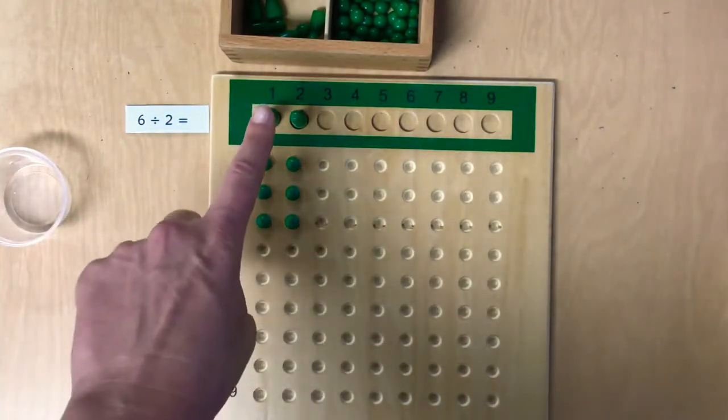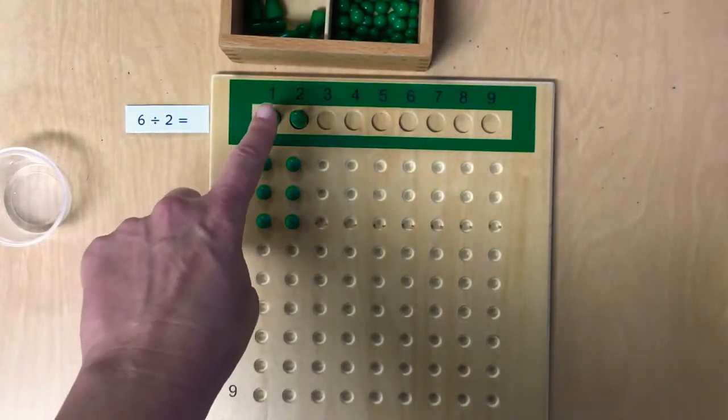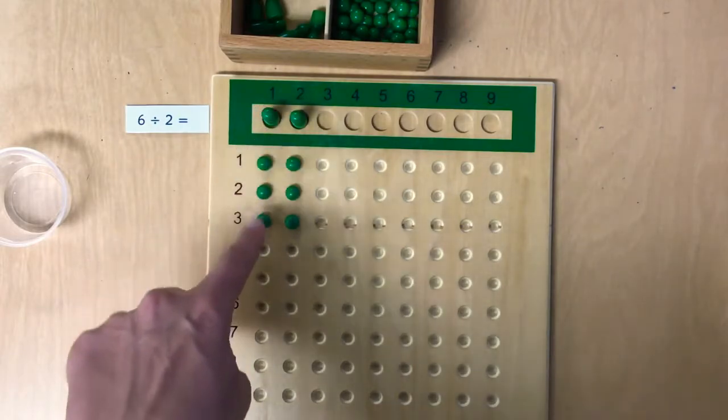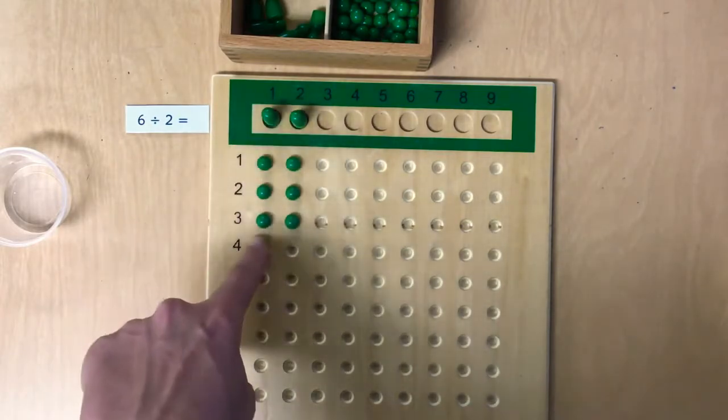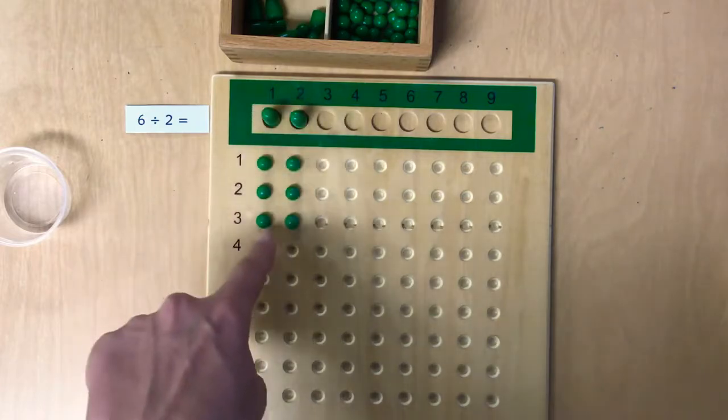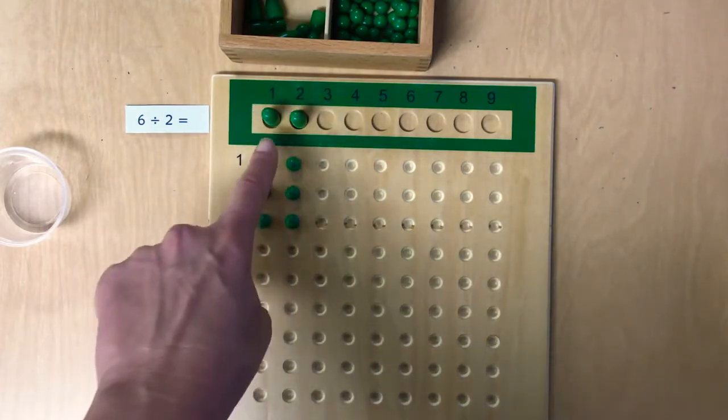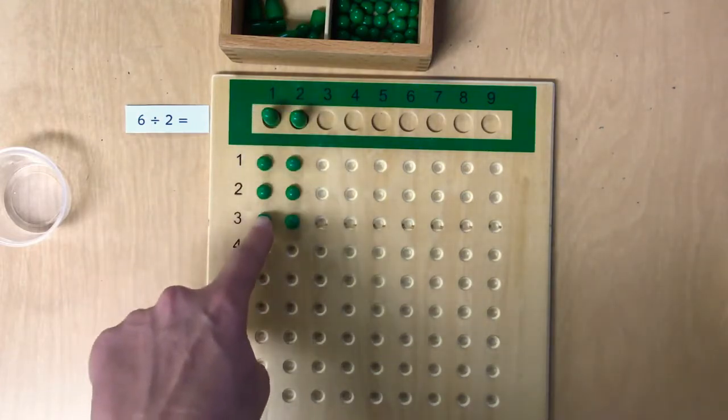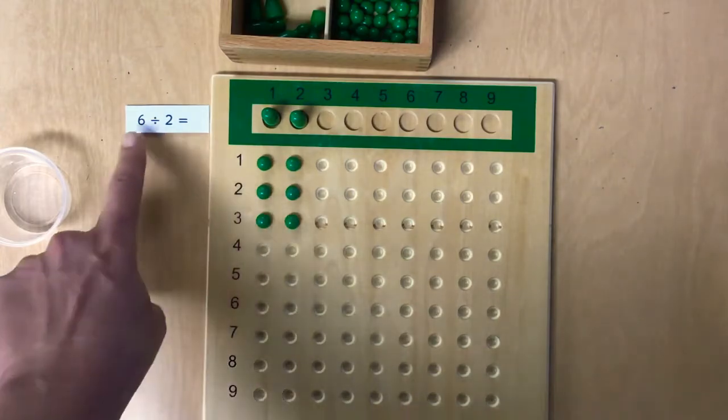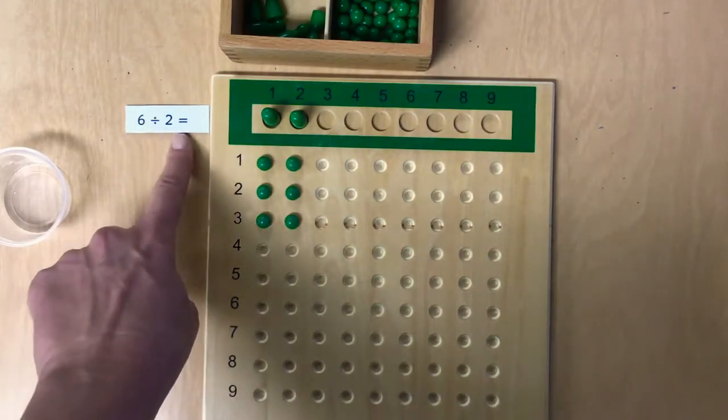The answer to our division problem is how many are in each group. And because they're equal groups, we just need to look at this first one. So the first Skittle got one, two, three green beads. So 6 divided by 2 equals 3.